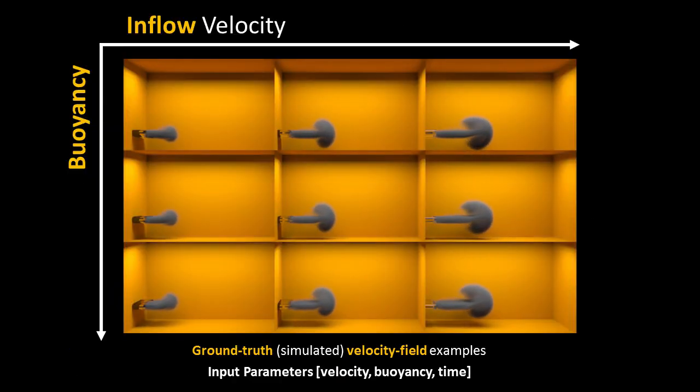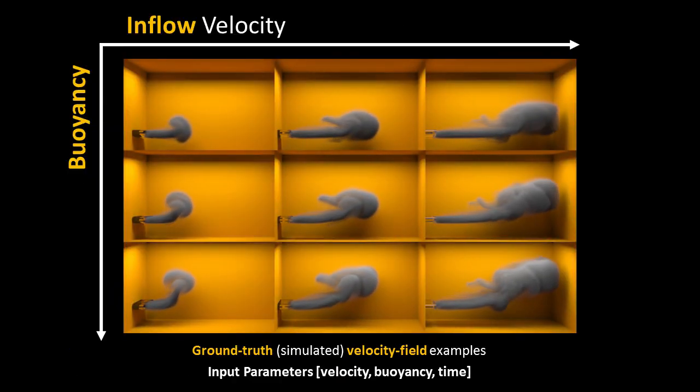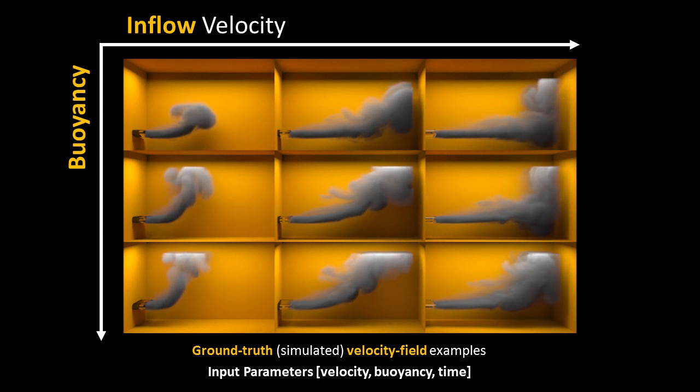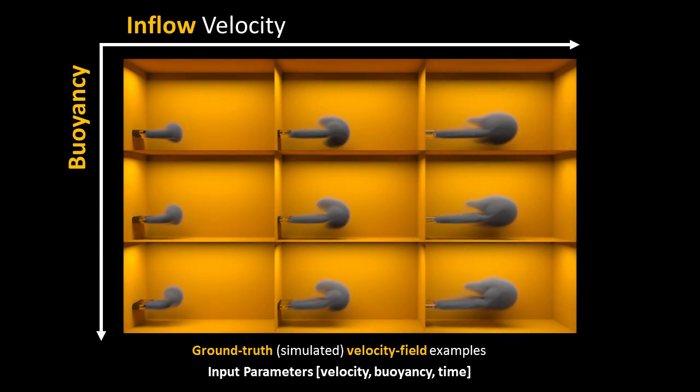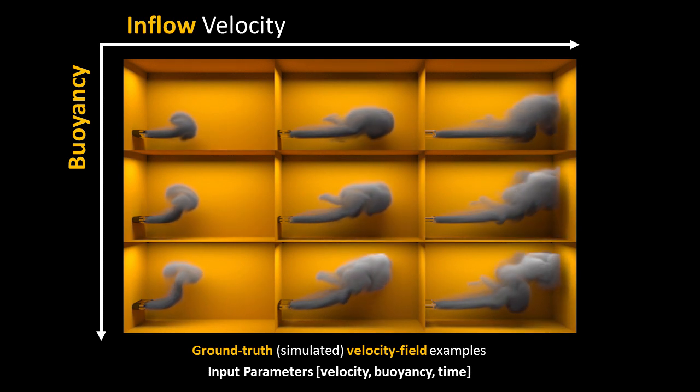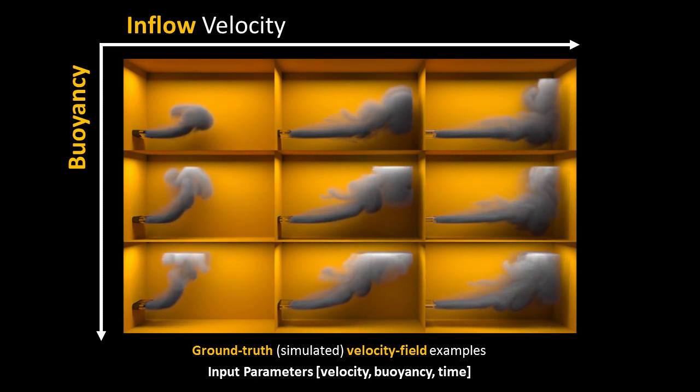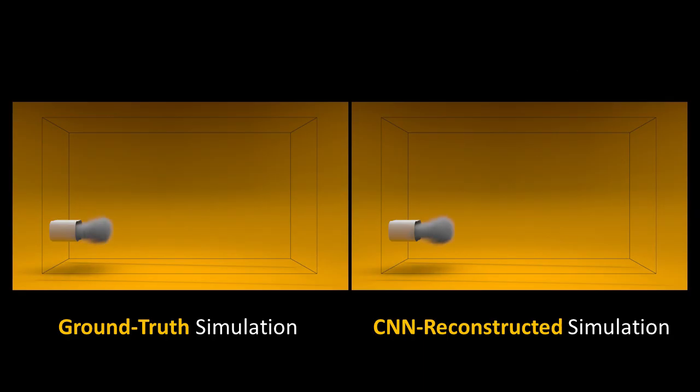The input to our algorithm is a single velocity field frame from a collection of parametrizable fluid simulations. In this example, we vary the inflow velocity and the buoyancy of a smoke source. Thus, the input parameters are the inflow velocity, the buoyancy, and the time elapsed.